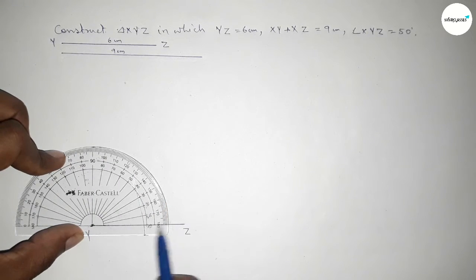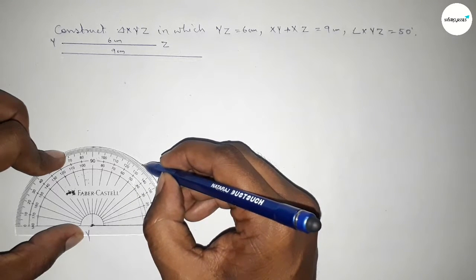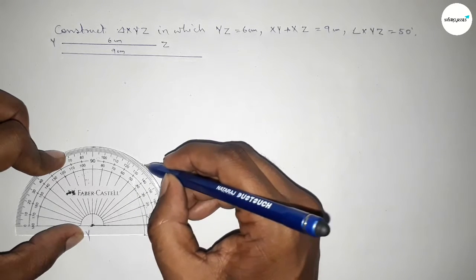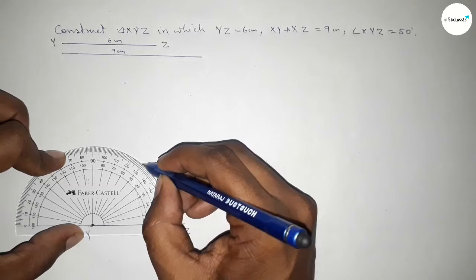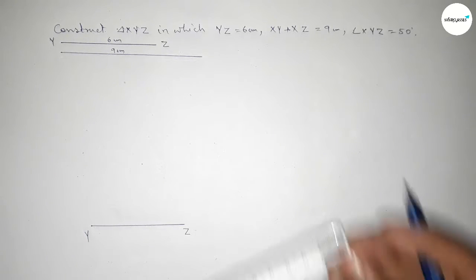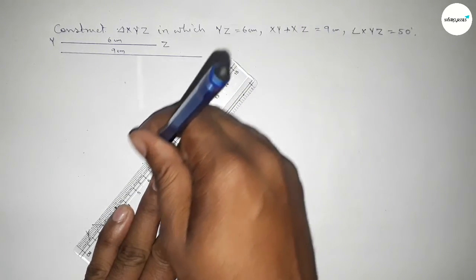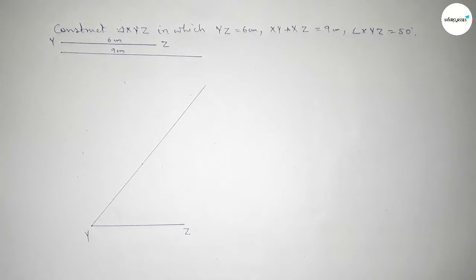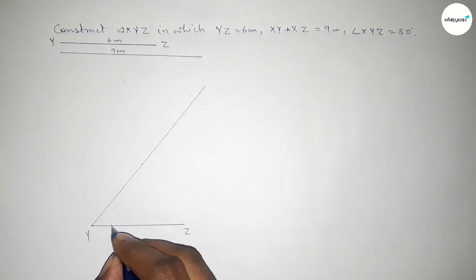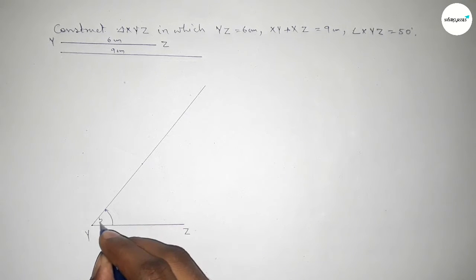So putting the compass here and counting the angle by using protractor. So this is a 50 degree angle on the point Y. Now joining this to get the angle 50 degrees. So this is angle 50 degree.